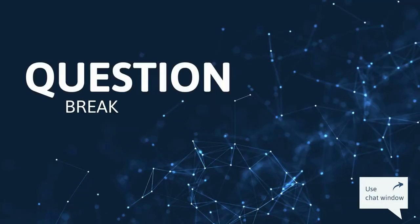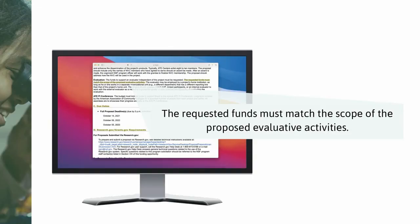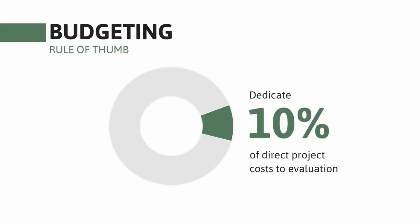How much do project evaluations cost, and what should you write into your budget? Here is the excerpt from the ATE solicitation about evaluation requirements: it states that the evaluation budget must match the scope of the proposed evaluative activities. The general rule of thumb is that 10% of a project's direct costs should be allocated for evaluation. That's a great place to start, and then you can go up or down from there depending on what level or type of evaluation is really needed for your project.